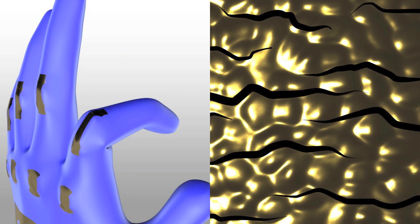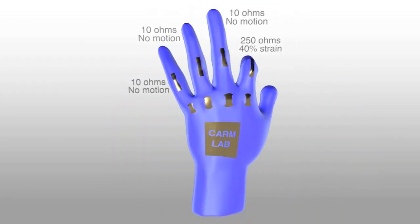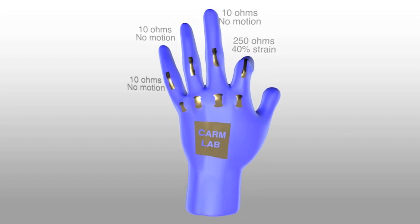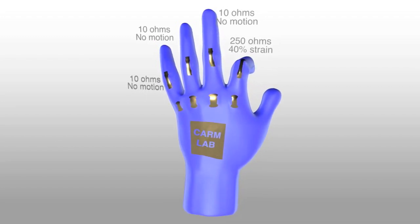The amount of cracking changes the electrical resistance of the sensor, and we can collect data from these sensors to determine how much each joint is bent. This information allows us to map the gesture that the hand is making.